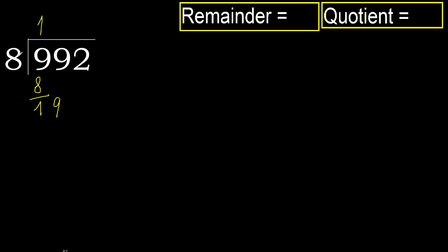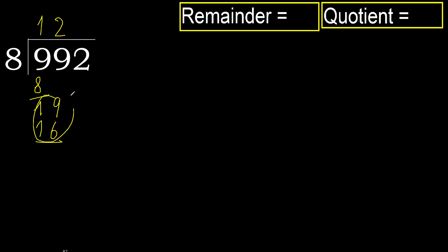8 multiplied by 3 is 24 — it is greater. Multiplied by 2 is 16 — it is not greater. Subtract: 19 minus 16 is 3. Bring down: 32.